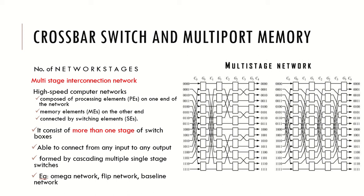The multi-stage network is a high-speed computer network composed of processing elements on one end and memory elements on the other end, connected using switching elements. There will be more than one stage of switch boxes. One key advantage of multi-stage networks is that using multiple stages, you can connect any input to any output. It is made by cascading more than one single-stage network. Examples include omega network, flip network, and baseline network.